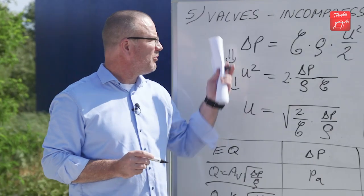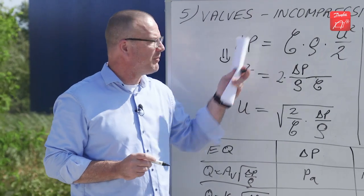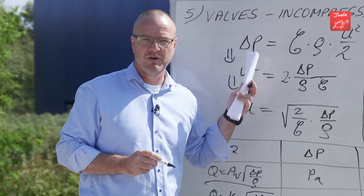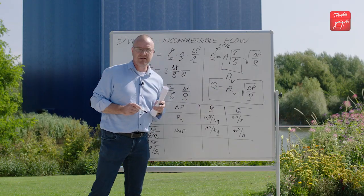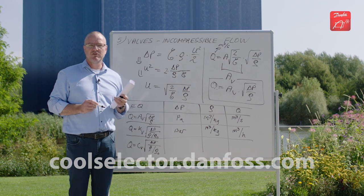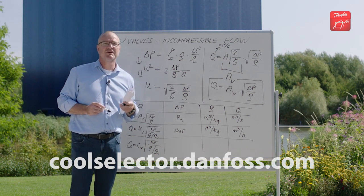Next time we'll look at what happens when we go from incompressible flow to compressible flow, that is gas flow in valves, and what the equation will look like then. Until then, you can download CoolSelector on the Danfoss homepage. Thank you for watching.